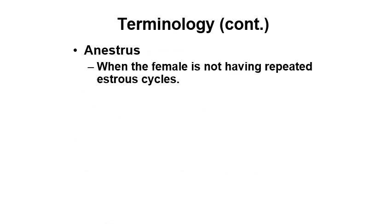Another important term is anestrus. When the female is not cycling or not having repeated estrous cycles, the animal is said to be not in heat, or in anestrus.